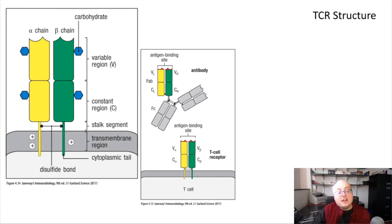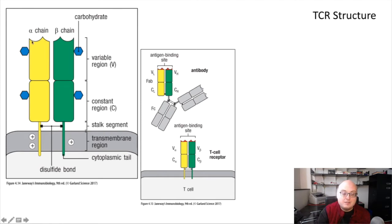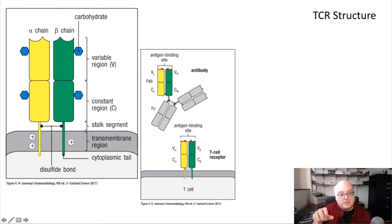The T-cell receptor looks a lot like an immunoglobulin molecule—there are a lot of overlapping structural features. You can think of the T-cell receptor as analogous to the Fab domain of an immunoglobulin molecule. As in the Fab domain, we have a light and a heavy chain, and a variable and a constant domain within both of those chains. The T-cell receptor has an alpha chain and a beta chain, and both have a variable region and a constant region, pretty similar to the Fab fragment of an immunoglobulin molecule.